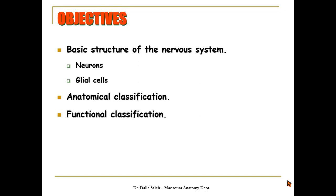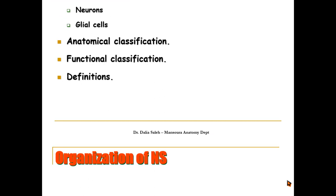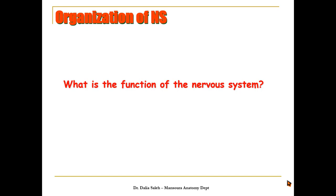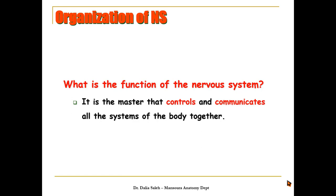We will also discuss the anatomical classification of the nervous system and the functional classification of the nervous system, and finally mention some definitions to know the organization of the nervous system. Let's ask ourselves first: what is the function of the nervous system? It is the master that controls and communicates all the systems of the body together.